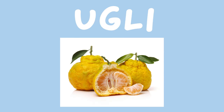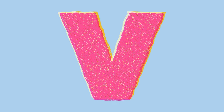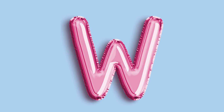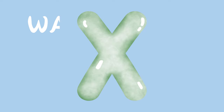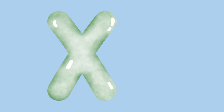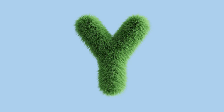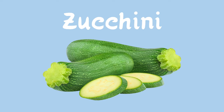U is for Ugly fruit. V is for Vanilla. W is for Watermelon. X is for Ximenia. Y is for Ya Khan. Z is for Zucchini.